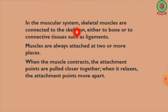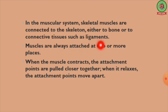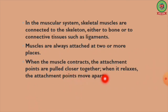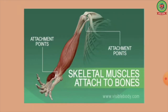In the muscular system there are three types of muscles. Skeletal muscles are connected to the skeleton — either to bone or to connective tissue such as ligaments. Muscles are always attached to two or more places. When a muscle contracts, the attachment points are pulled closer together; when it relaxes, the attachment points move apart. This helps in the movement of the bone.